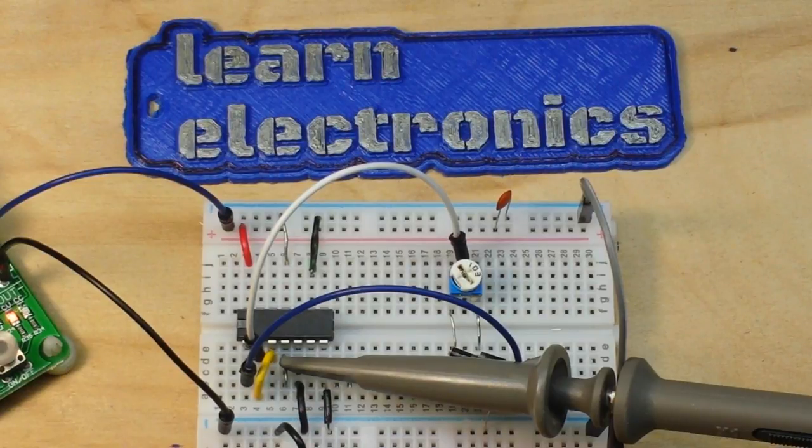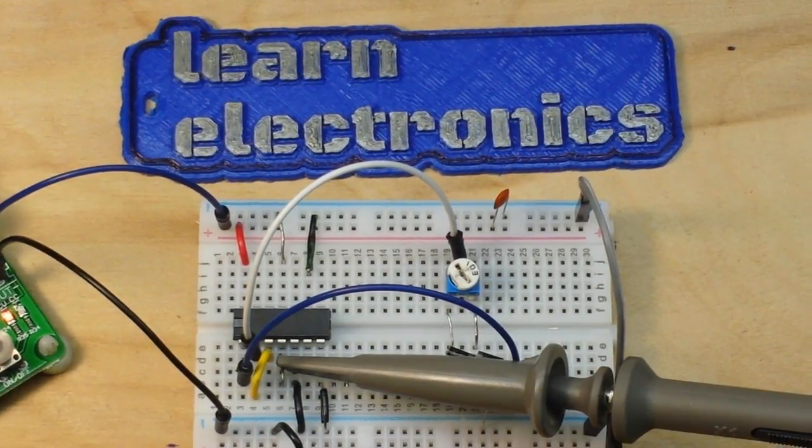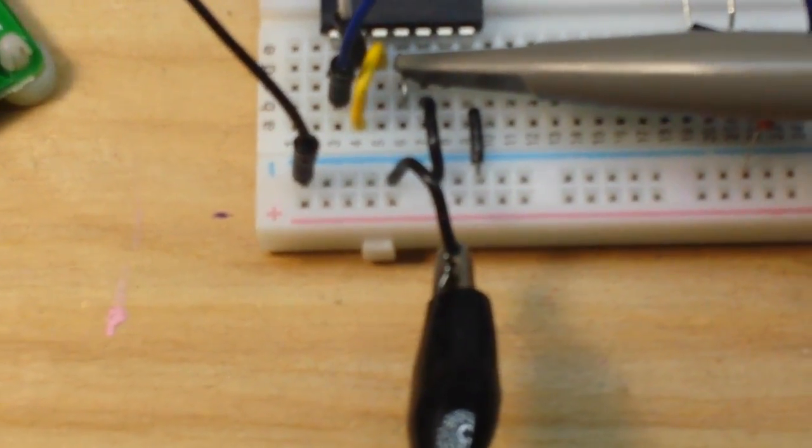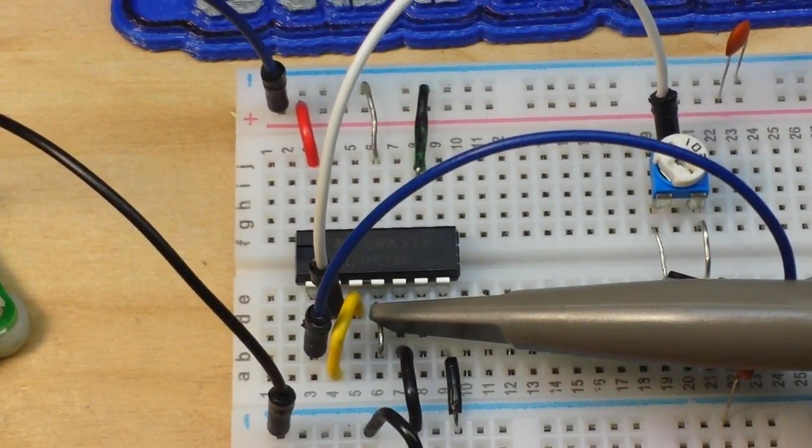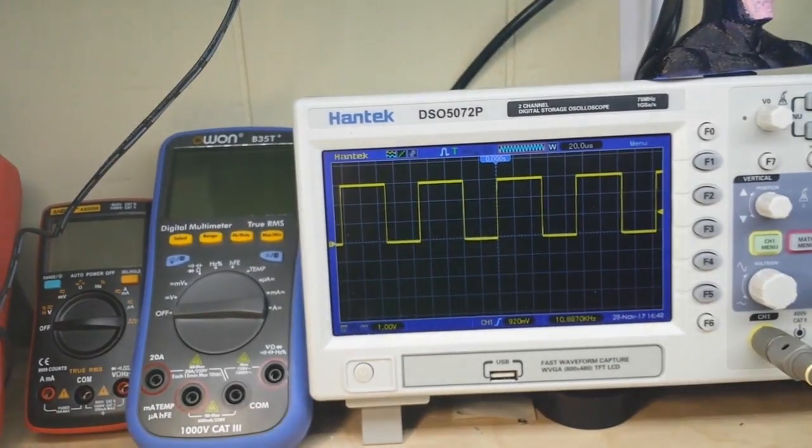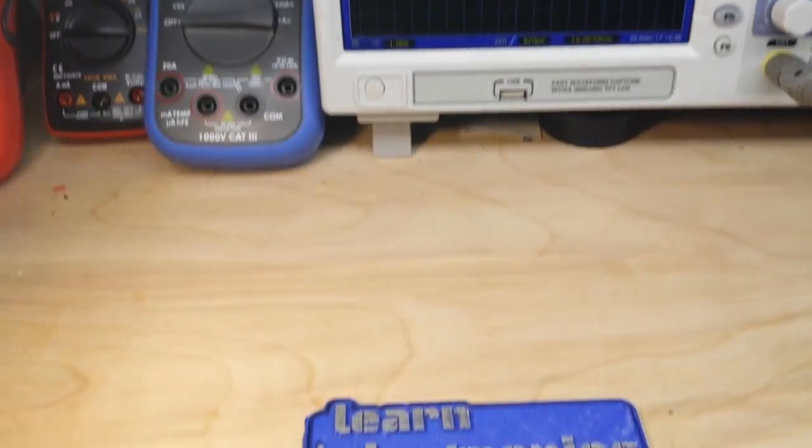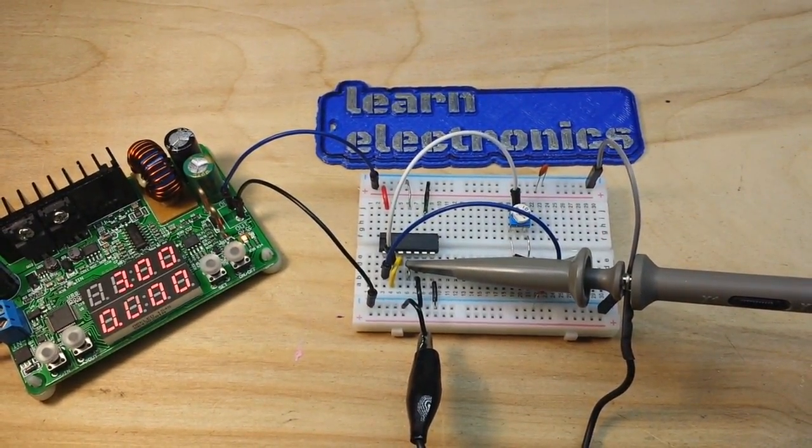You can do some pretty cool stuff with it. For instance, if you come down here and have a look at this circuit here and then swing up and look at the screen, it's a square wave generator. How did we do that? I'll show you in just a minute.